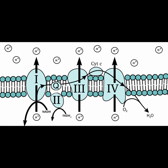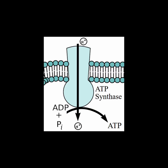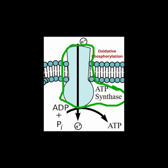The second part of the process uses the proton gradient to power a protein complex called ATP synthase that manufactures the ATP molecules.